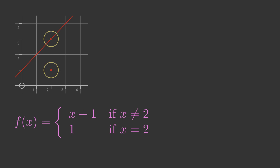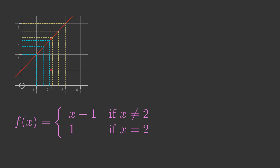We can find the limit at x equals 2 in the same way as before. If we start with a value less than 2 and get closer and closer to 2 without reaching it, the value of f will get closer and closer to 3. If we start with a value greater than 2 and get closer and closer to 2 without reaching it, the value of f will also get closer and closer to 3. So the limit of f as x approaches 2 is 3, but the value of f is 1.